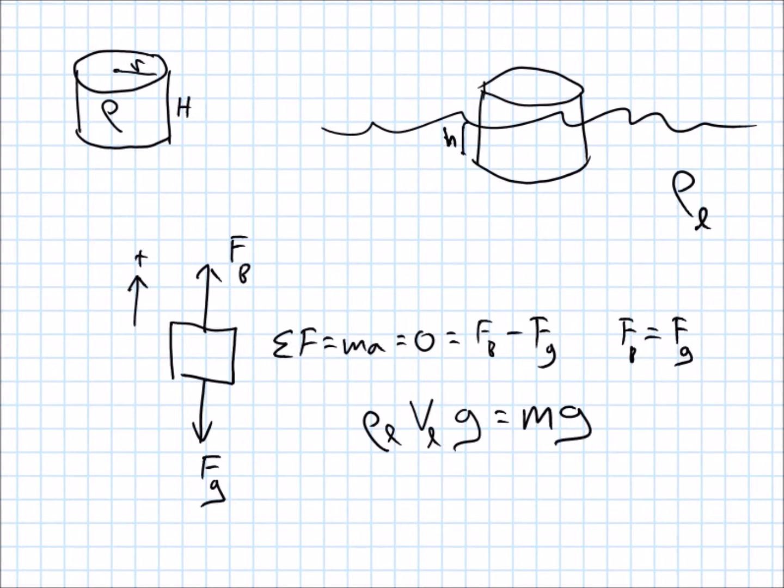But remember what we know. We only know the density of the liquid, we know the height, the density of the object, and these cylinders radius. So those four things. So I don't know the volume of liquid displaced, and I don't even know the mass of the object.